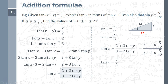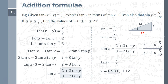Since we're asked for the values of x, we compute tan⁻¹(3/2) ≈ 0.983 radians, and adding π gives approximately 4.12 radians. These are our two values between 0 and 2π, and the problem is solved.